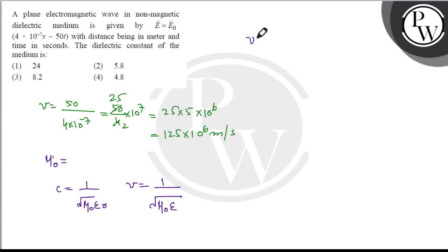So v upon c equals root of mu naught epsilon not upon mu naught epsilon, which equals root epsilon upon epsilon not.